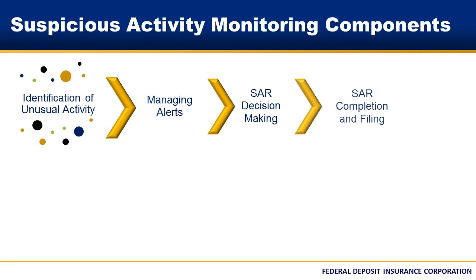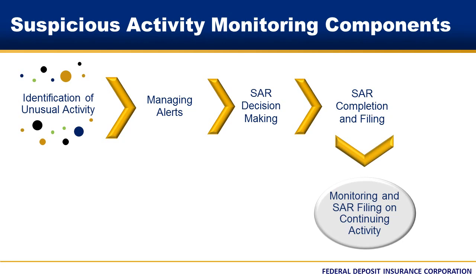The fourth component is SAR completion and filing. These are critical parts of the SAR monitoring and reporting process. Procedures should be in place to ensure SARs are filed in a timely manner, are complete and accurate, and that the narrative provides sufficient description of the activity reported as well as the basis for filing. The fifth and final component is monitoring and SAR filing on continuing activity. The bank should have procedures that outline how it will monitor future activity in the account and address recurring SAR filings. The procedure should include an escalation process for review of the identified accounts, including a recommendation if such accounts and relationships should be maintained or closed.